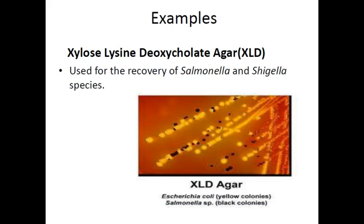This is a second example of differential medium in which Salmonella species appear as black color colonies, while E. coli appears as yellow color colonies, allowing identification of different bacteria based on colony color.